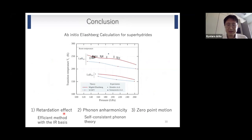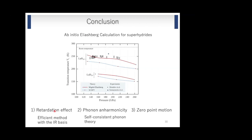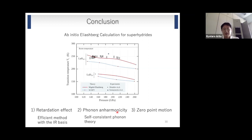Let me summarize. We introduced recent progress in ab initio Eliashberg calculations, focusing on the retardation effect. We can now calculate the transition temperature of superconducting hydrides very accurately, which can be used in the future for materials design. Thank you very much for your attention.